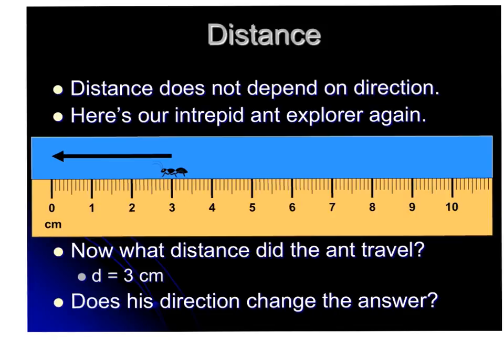In this example, the ant is crawling back. Again, the distance does not depend on the direction. So if it did, we would say a negative 3, but because distance is a scalar quantity, we're not going to have a direction. So we're still just going to say that it's 3 cm.